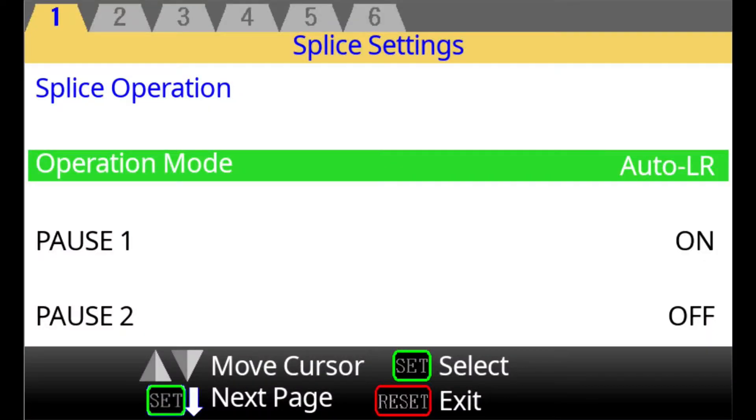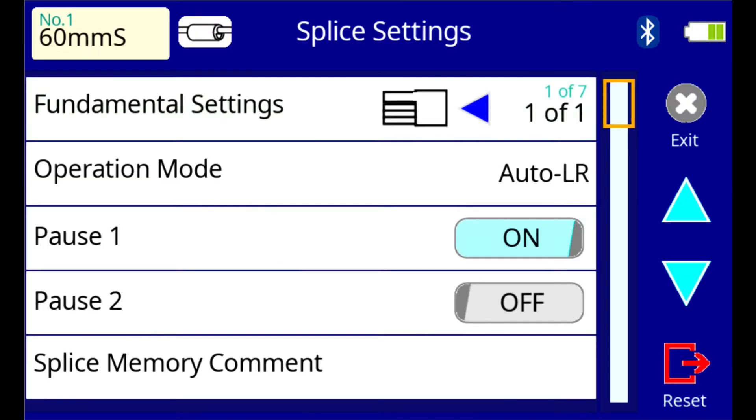Another thing you can do is change the sheath clamp operation mode located in the splice settings of your 90S menu. You can set this setting to manual if you simply want to keep the fiber clamped after a splice.